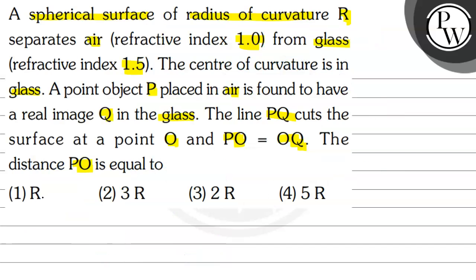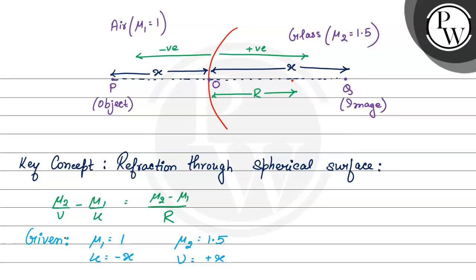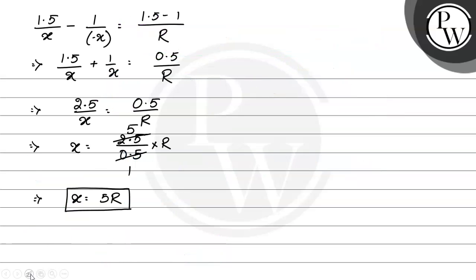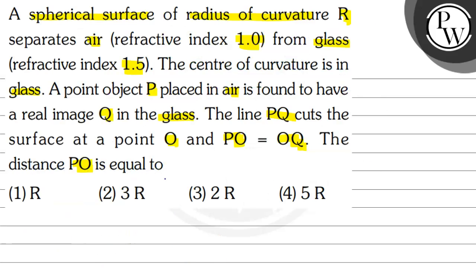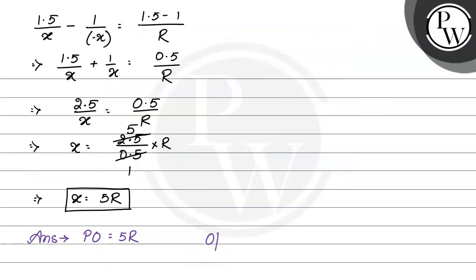The question asks us to find PO. Since PO equals X, we can conclude that PO equals 5R. Looking at the options, option number 4 is correct. The correct option is option 4. I hope you have understood the solution well. Thank you and best of luck.